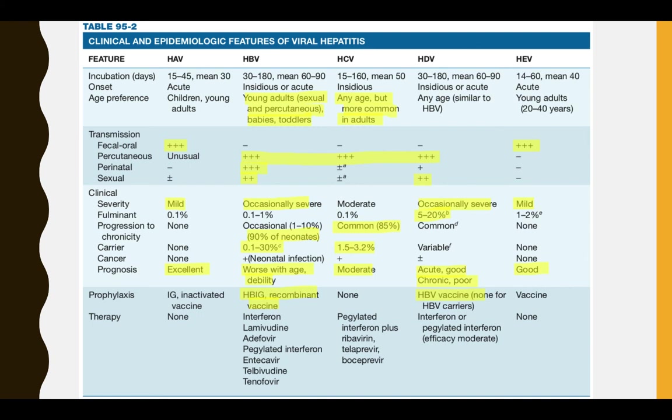For B, C, and D — if the acute phase is cleared, prognosis is good. But if chronic infection develops, it is worse and worsens with age. For prophylaxis: A has both a vaccine and immunoglobulins. E also has a vaccine. C still has no vaccine, though one is in the pipeline. For B, there is a vaccine, and the same vaccine will cover D since D requires B.